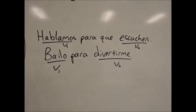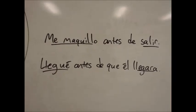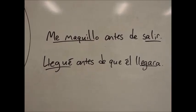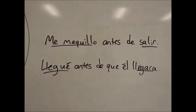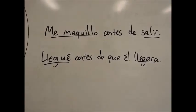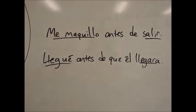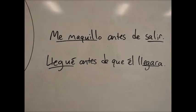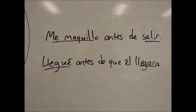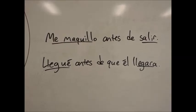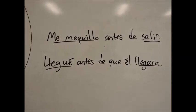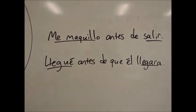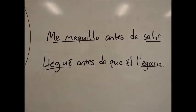Here are two more examples with antes de. Me maquillo antes de salir means I put on makeup before I go out. Both subjects are yo, so salir stays in the infinitive. As opposed to llegué antes de que él llegara. The first part has yo for the subject, but the second part talks about él. Since there's a difference in subject, we conjugate the second verb in the subjunctive. Notice that V1 is conjugated in the past, which means we also need to conjugate V2 in the past subjunctive.